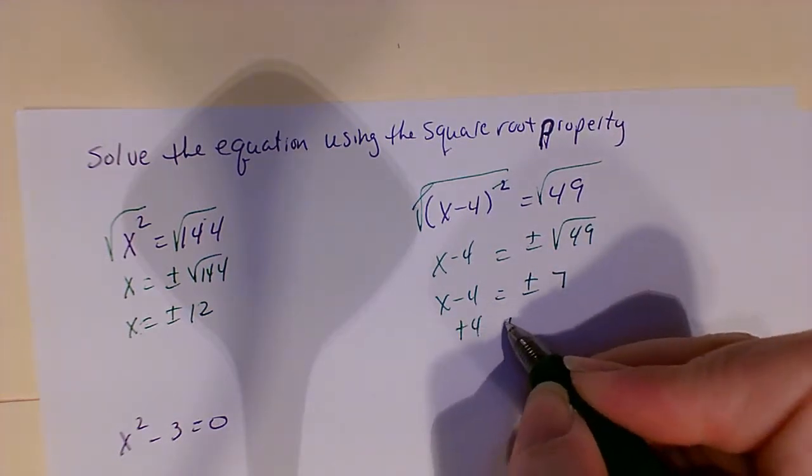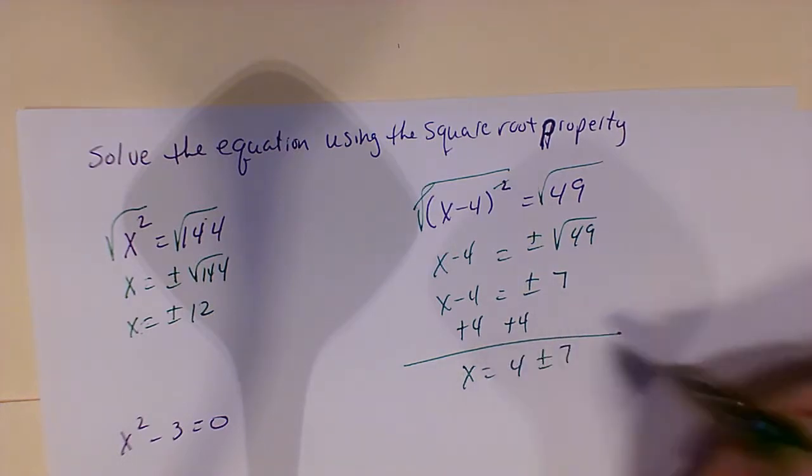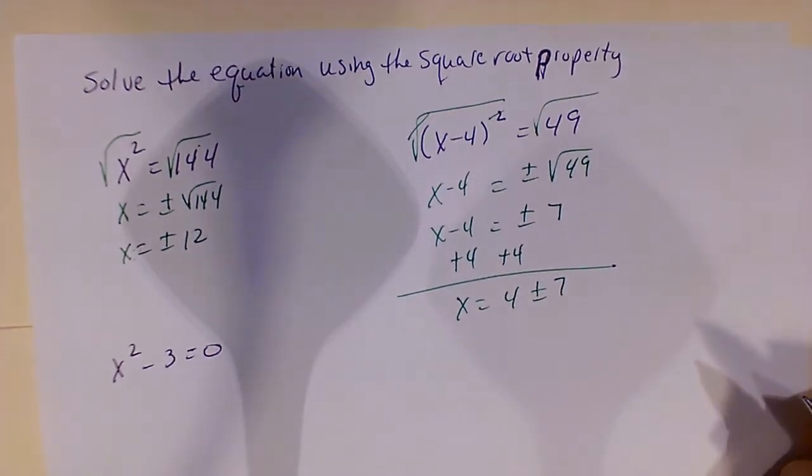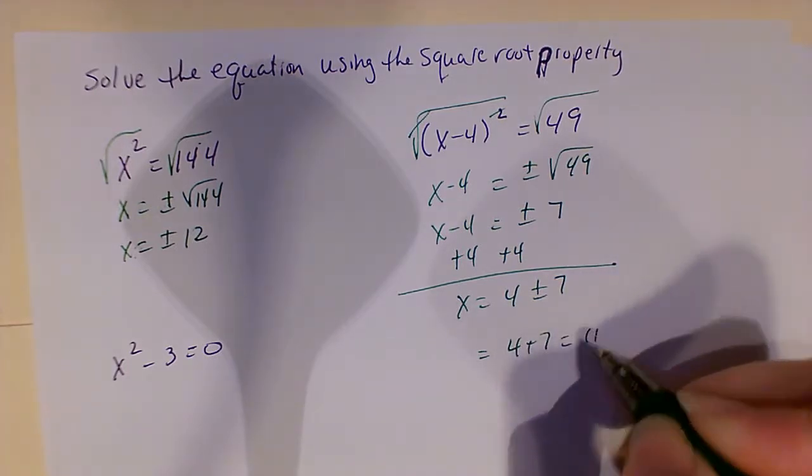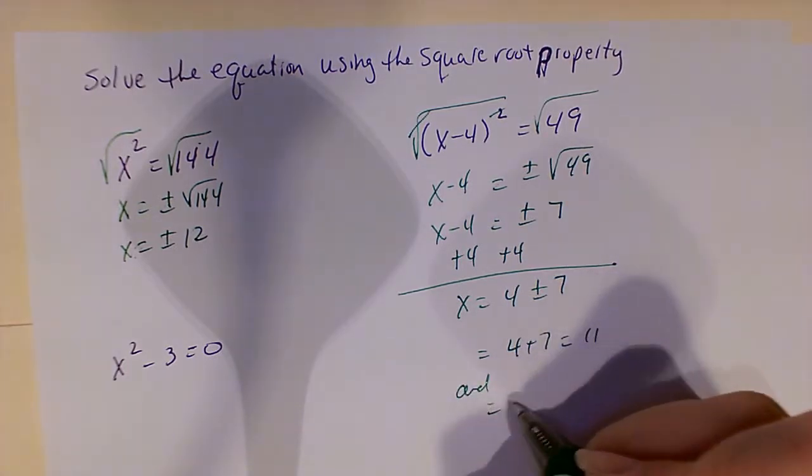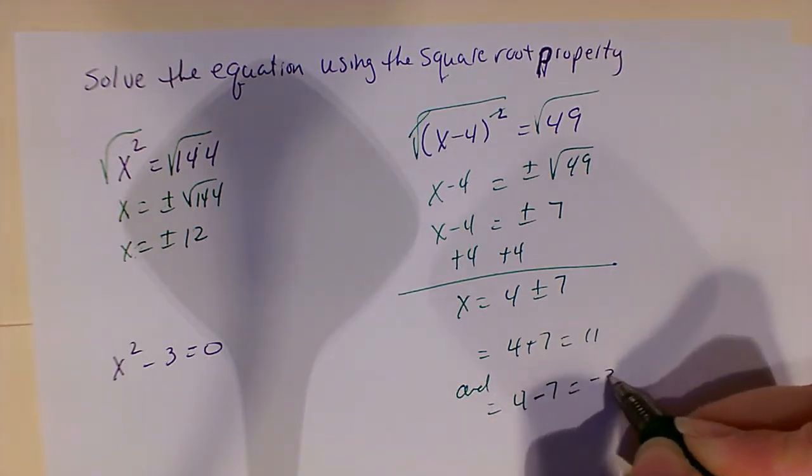So now I'm going to add my 4 over. So x will equal 4 plus or minus 7. So now I have two answer possibilities. I have 4 plus 7, which equals 11, and I have 4 minus 7, which equals negative 3.